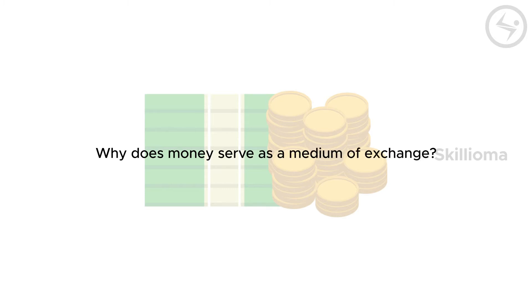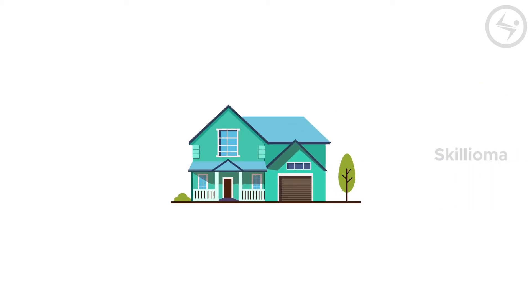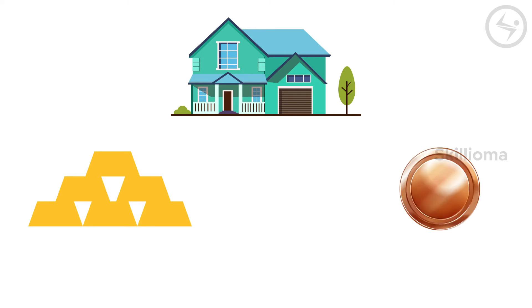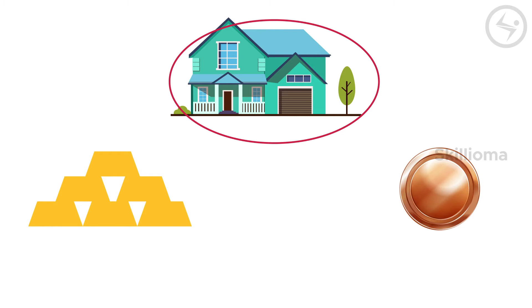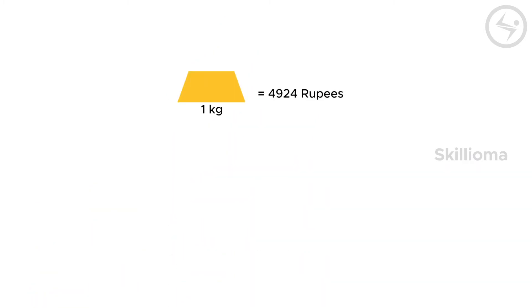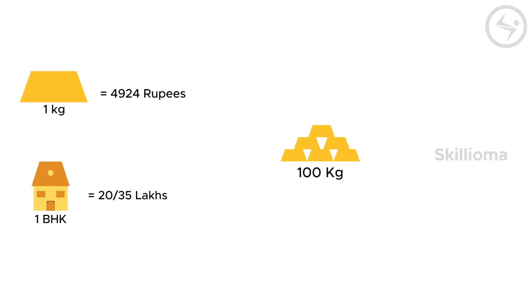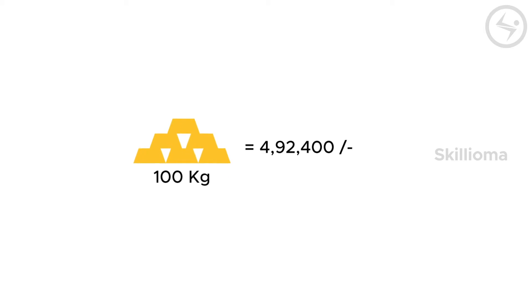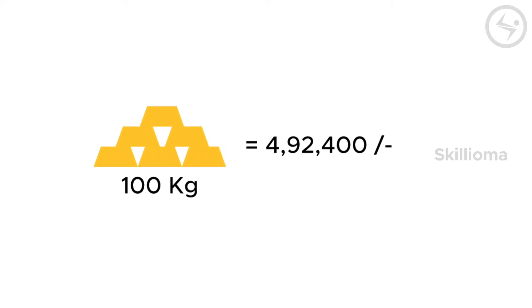Let's consider an example. Suppose you wish to buy a house. Let's assume that you have 100 kgs of gold and 200 metal coins as money. Will you be able to buy this house? The price of 1 kg of gold is 4,924 rupees, and an average one-bedroom house is anywhere between 20 to 35 lakhs. So if you have 100 kgs of gold, that amounts to 4 lakhs 92 thousand and 400 rupees — not enough. You might feel you have a lot, but it does not add up to the value of the house.